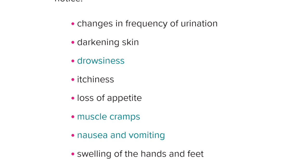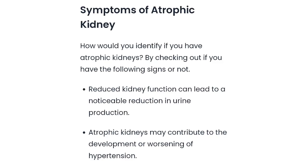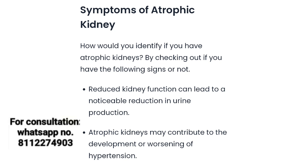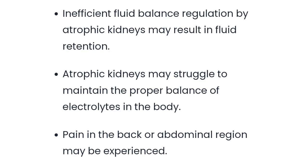This person has a complaint of loss of appetite — they don't want to eat food. This person has muscular cramping, or nausea or vomiting. This person has swelling in the hands and legs. Also, if a person has kidney atrophy, the level of creatinine in such a person can increase, and there is an imbalance of electrolytes.